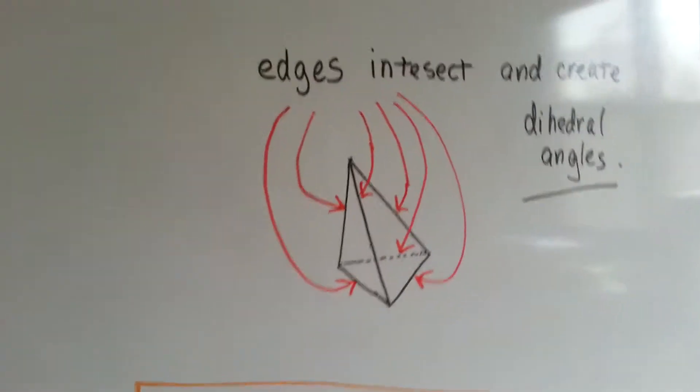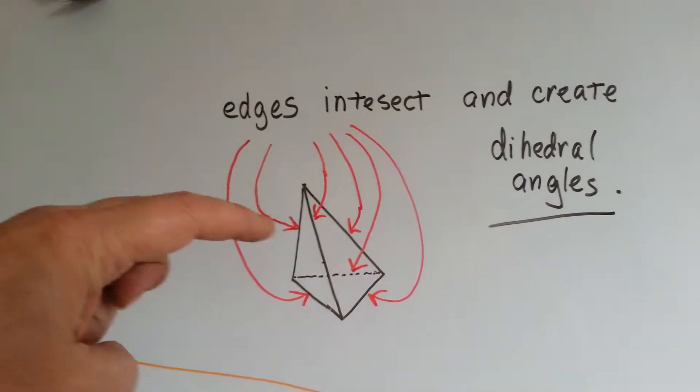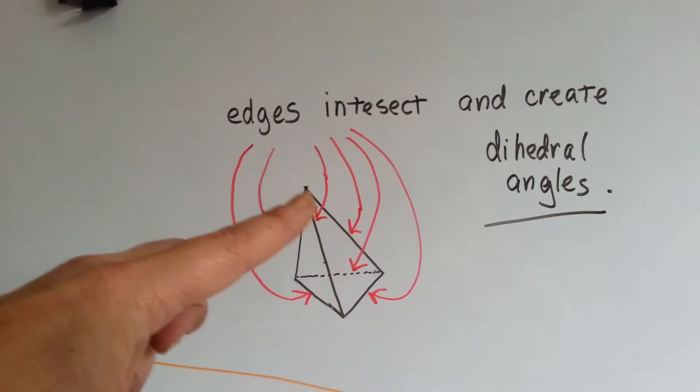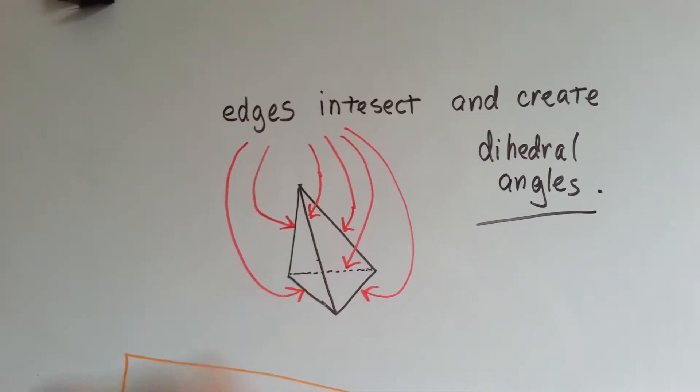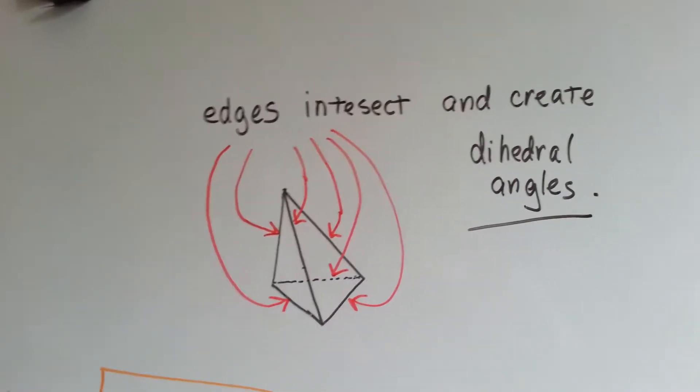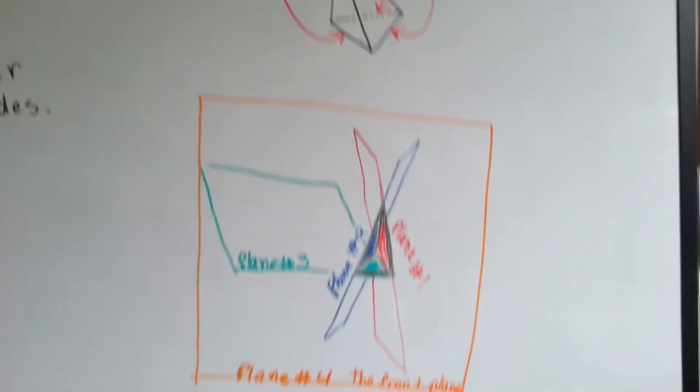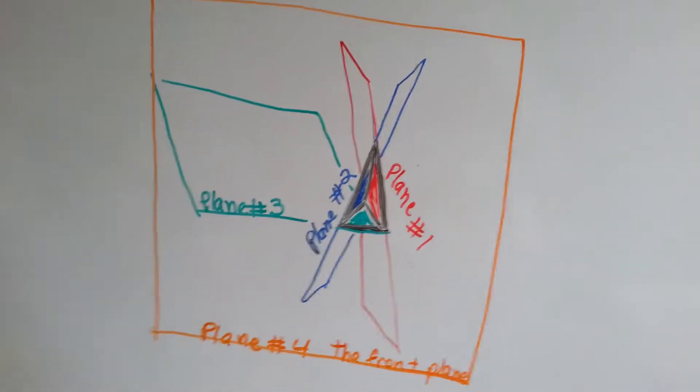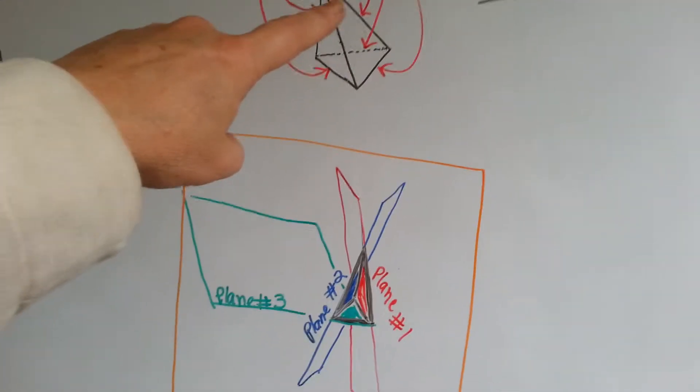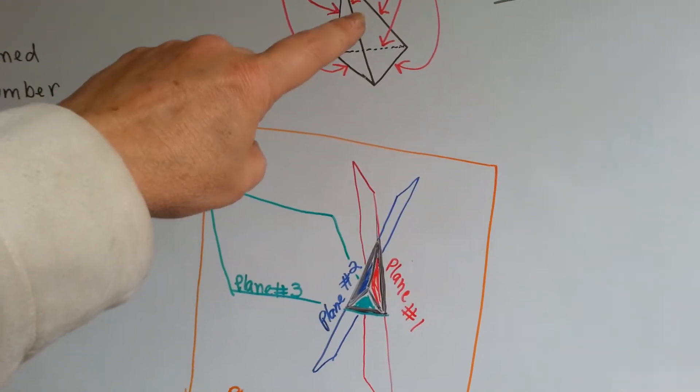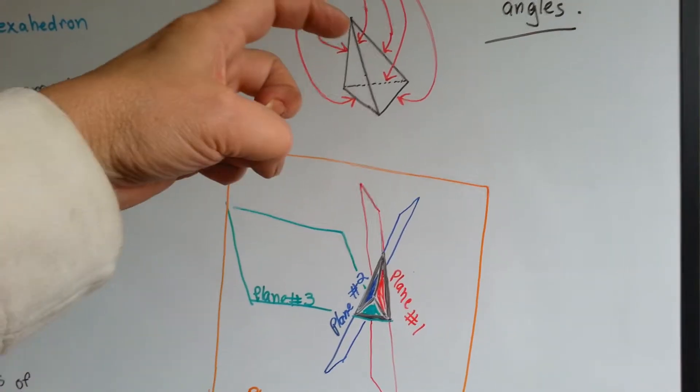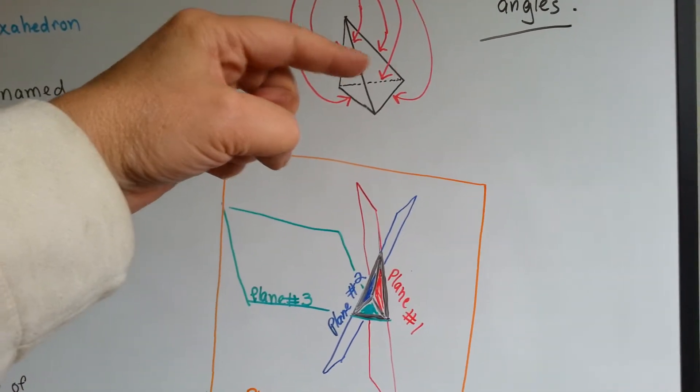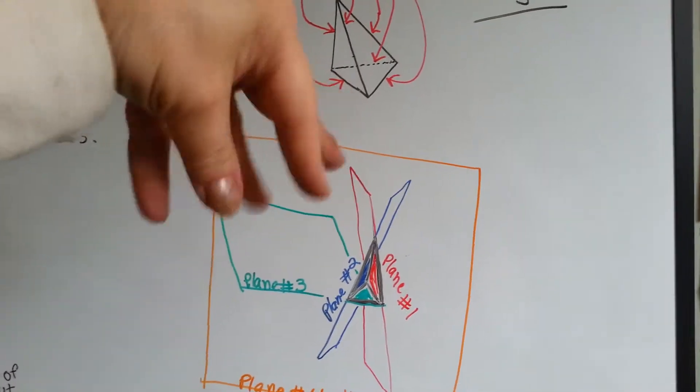When we look at a triangular prism, each one of these edges intersect the next edge and create dihedral angles. This is not the world's greatest drawing, but it's going to get better, so stick with me. So imagine this triangular prism, which is a tetrahedron. We've got four sides: the back side, this side, this side, and the bottom side. It's a triangular prism.